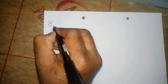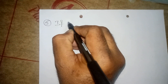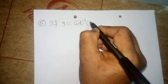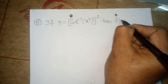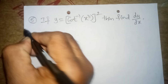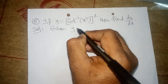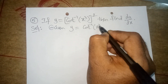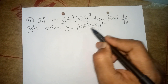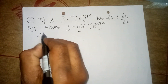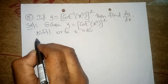Hello, namaste. Today we are discussing maths. The given question is: if y is equal to cot inverse of x cube, whole square, then find dy by dx. Start solution — write the given value. Given y is equal to cot inverse of x cube, whole square. Here cot inverse x cube is one formula, and x power n is another formula.